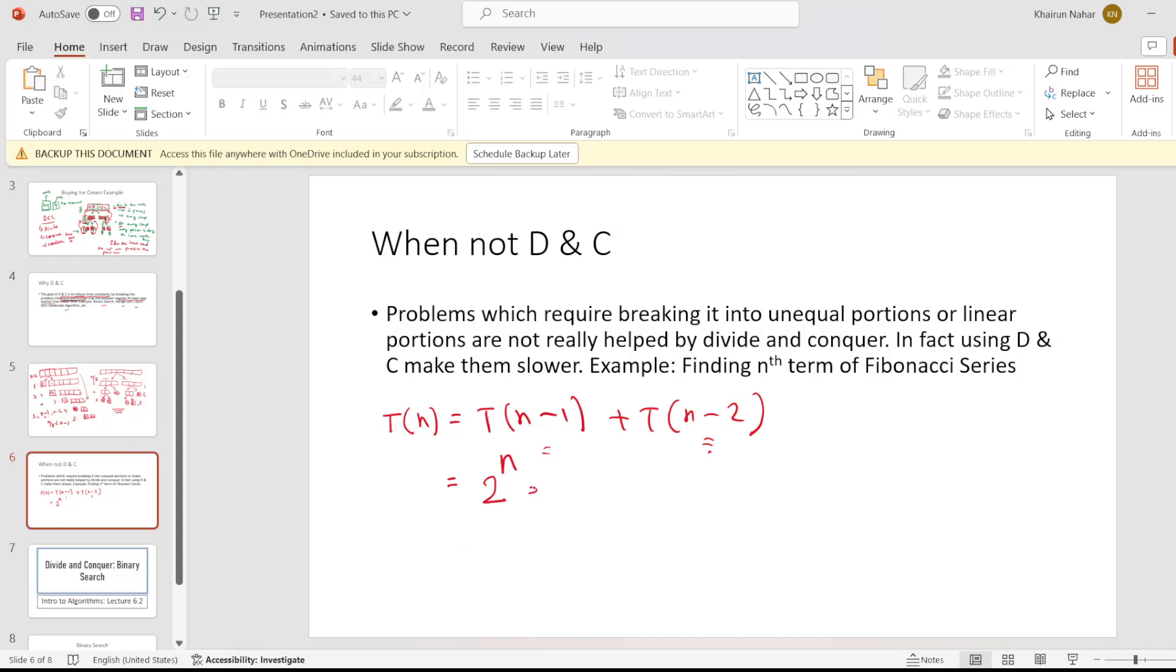Then we got a time complexity of 2 to the power n. Right? This is huge, exponential. But if we had solved the problem using a normal iterative loop, we can see that the time complexity would be linear, which is, I mean, if you compare exponential with linear, this is huge, right? So this is an example where divide and conquer does not apply.